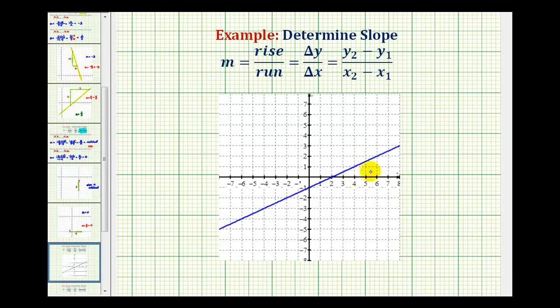So let's take a look at our line. If we can identify two points that have integer coordinates, we can analyze the graph of the line to determine the slope. For example, this point here has coordinates (-2, -2) and this point here has coordinates (4, 1).